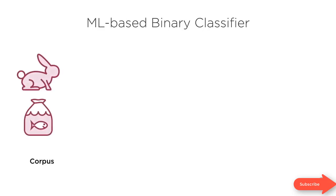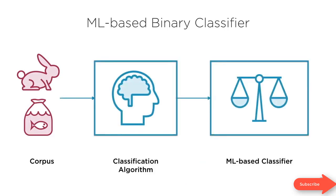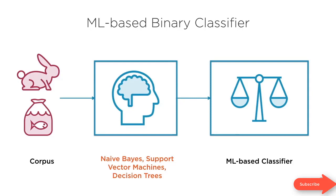Here are the steps in building an ML based binary classifier. You have a corpus of data that you feed into a classification algorithm to get a classification model, or classifier. The classification algorithm can be one of many — Naive Bayes, Support Vector Machines, Decision Trees. These are all classification algorithms we'll study in this course. But the simplest possible classification model is logistic regression, which we'll study in detail in the next clip.